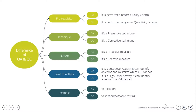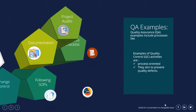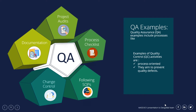Regarding level of activity, quality assurance is a low-level activity — it can identify errors and mistakes which quality control cannot. Quality control is a high-level activity — it can identify errors that quality assurance cannot. An example of quality assurance is verification, whereas an example of quality control is validation, such as software testing.